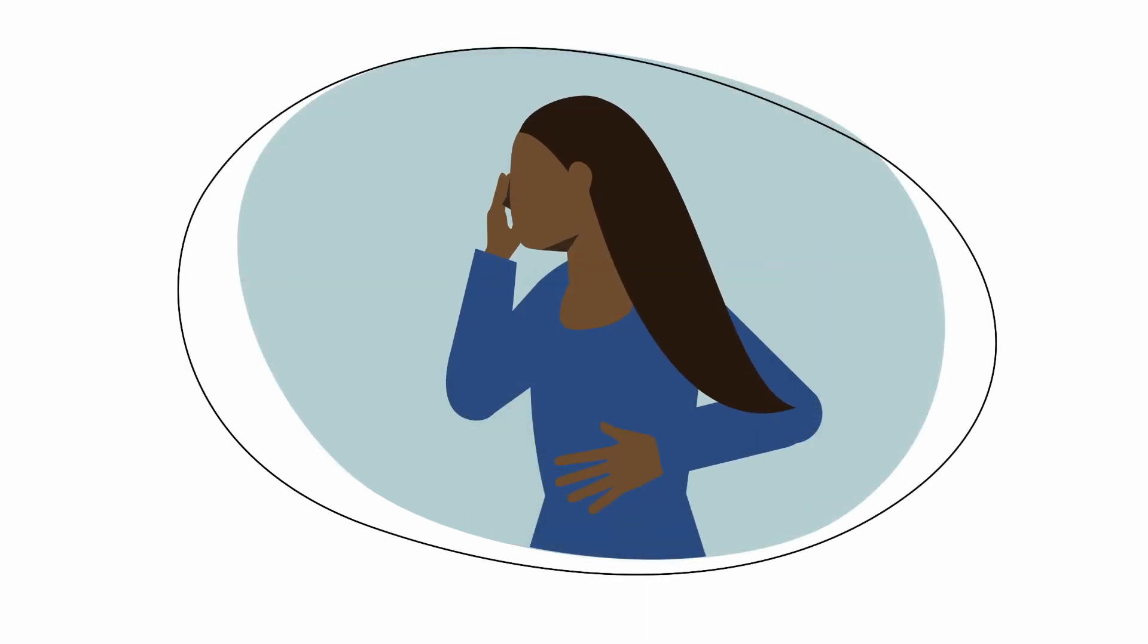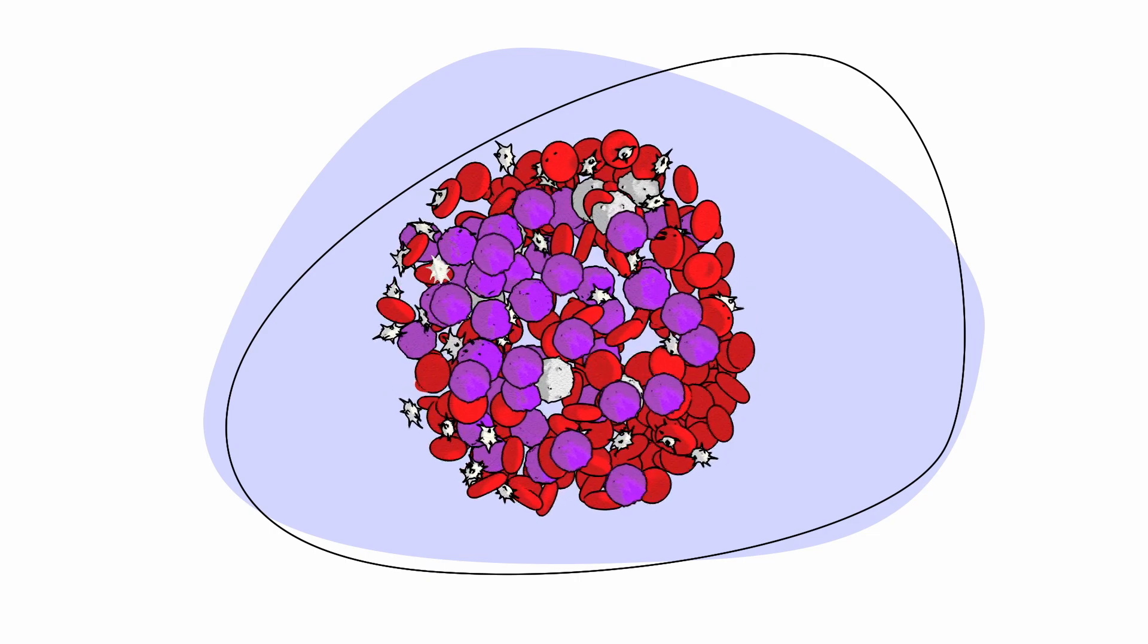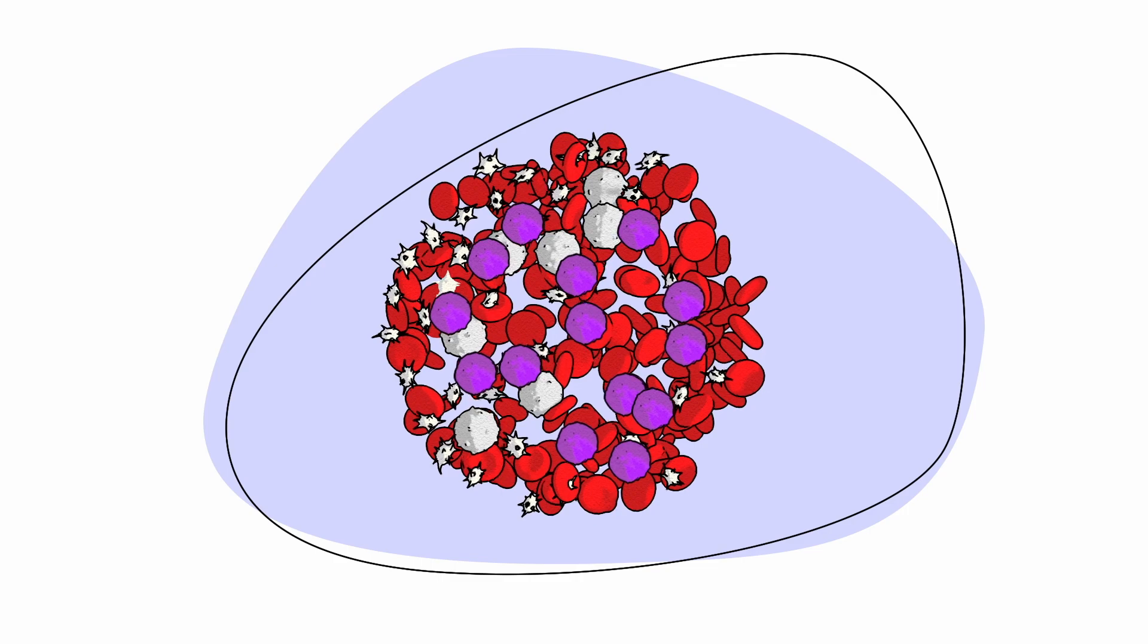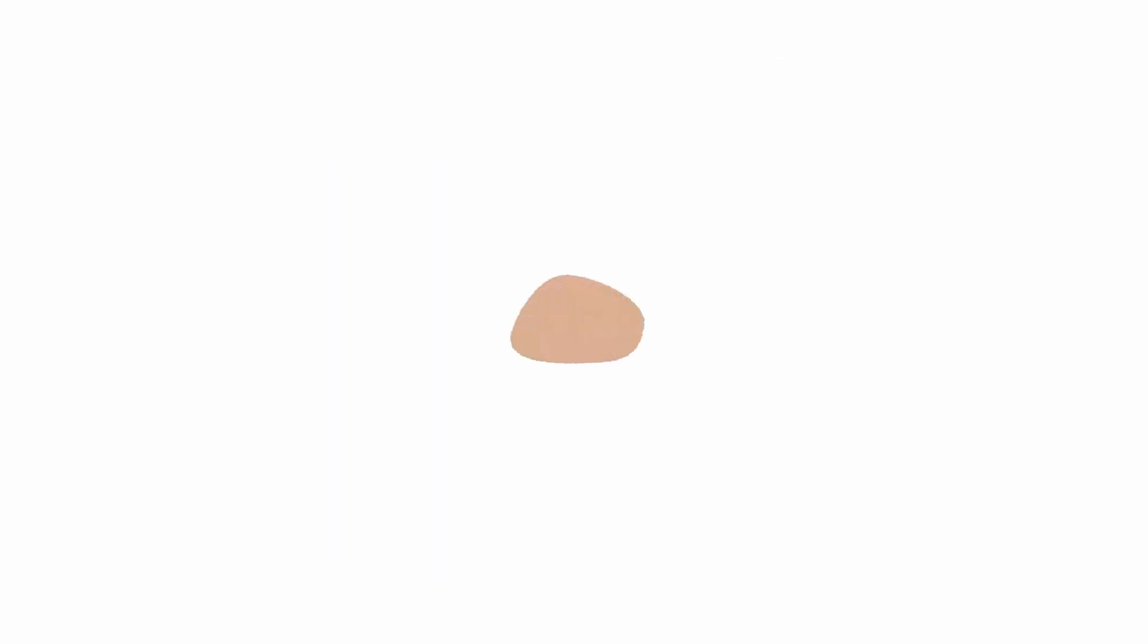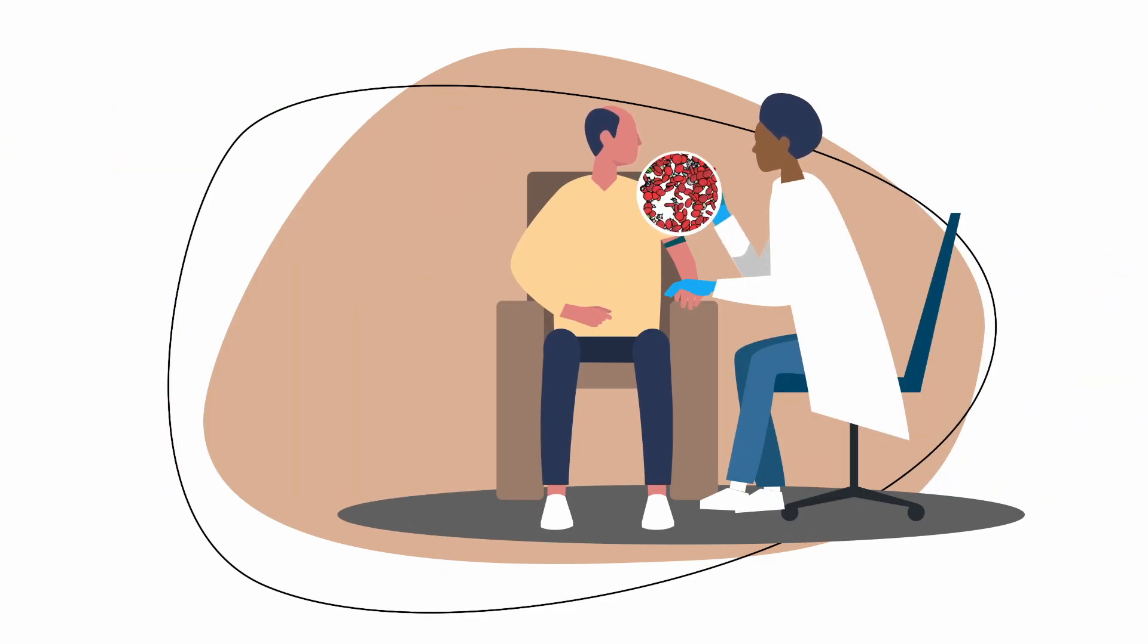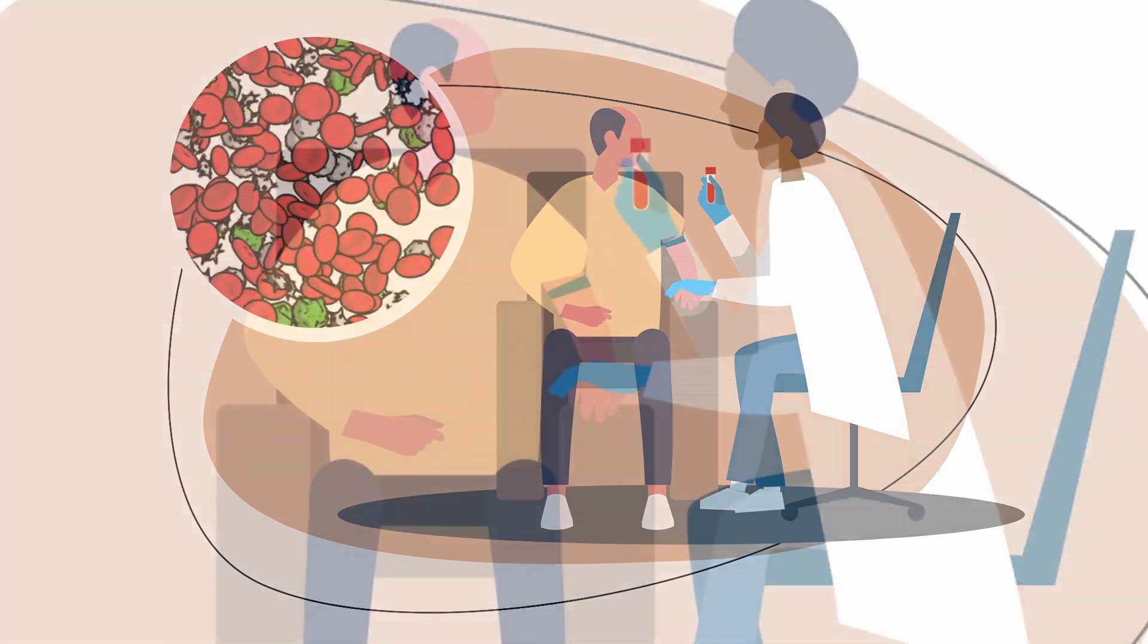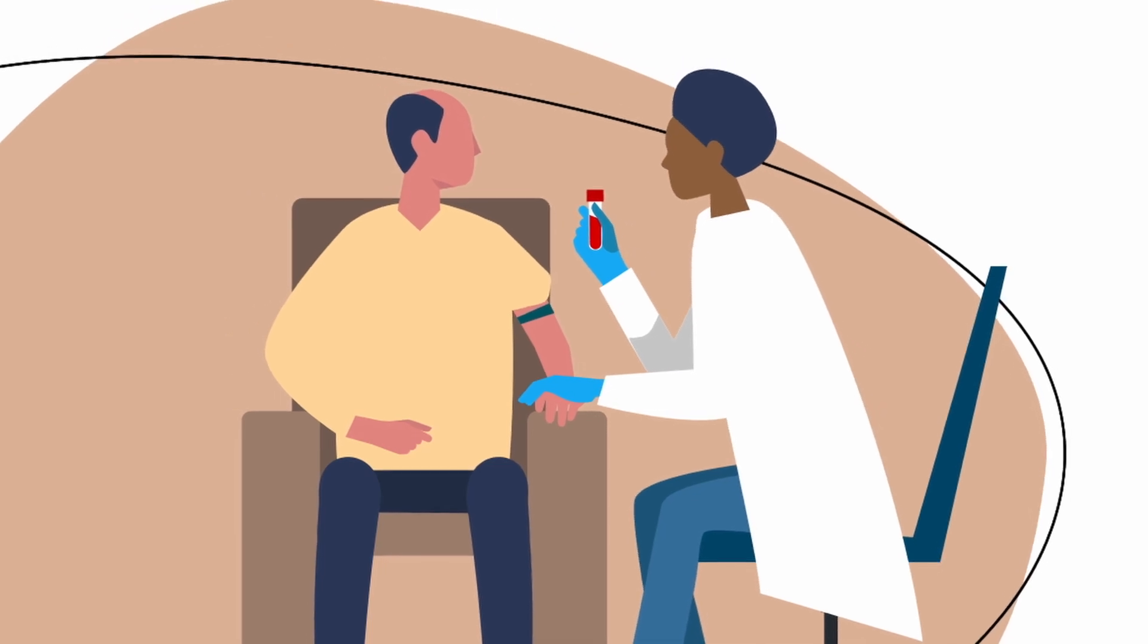A side effect is an unwanted or unexpected reaction to a medication or treatment. Drug resistance is when a medication becomes less useful due to a certain amount of treatment. During active surveillance, you will have regular physical exams and blood tests to monitor your blood cell counts. This will help your doctor to detect any changes in your CLL.